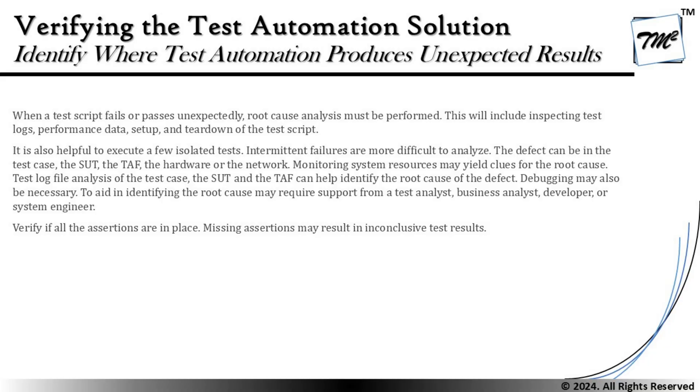Root cause analysis may require support from test analysts, business analysts, developers, or system engineers. Multiple stakeholders may contribute — developers may help with object changes, and other stakeholders can clarify side effects of design changes. It is crucial to identify which stakeholders can contribute to the debugging and root cause analysis process. Finally, verify that all assertions are in place, as missing assertions may also result in inconclusive test results. Assertions are not only for verification but also for checkpoints confirming that things worked fine up to that point.